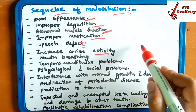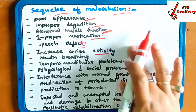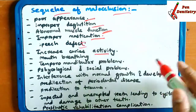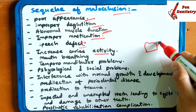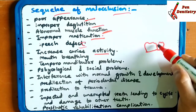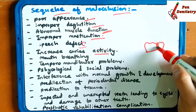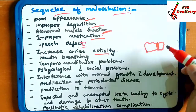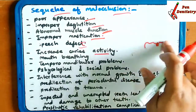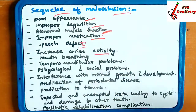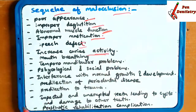Increased caries activity — due to the crowding or abnormal position of the tooth, the lodging area is increased due to the malocclusion, and this causes an increase in caries activity.